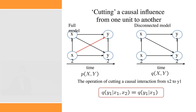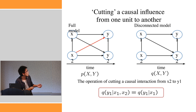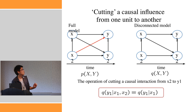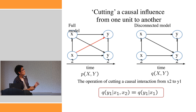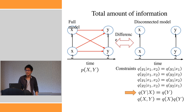With this setting, we first need to define the operation of cutting causal inference. Consider cutting the causal inference from X2 to Y1. In this case, we impose a constraint on the disconnected model: Q(Y1 | X1, X2) equals Q(Y1 | X1), meaning the state of Y1 only depends on X1, not on X2. By imposing this condition, we can cut this connection. Using this definition of cutting causal inference, we can derive many well-known quantities, including integrated information.